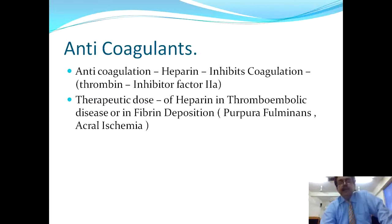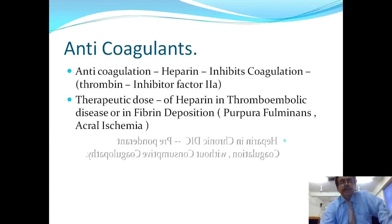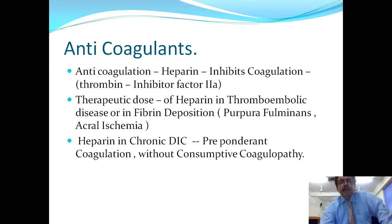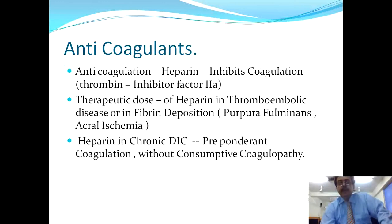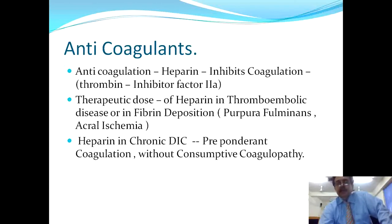The therapeutic dose of heparin is used in thromboembolic disease, fibrin deposition, purpura fulminans, or acral ischemia. Heparin in chronic DIC is given predominantly in the coagulant variety without consumptive coagulopathy. Remember: whenever there is co-existent consumptive coagulopathy, offering heparin can be more catastrophic — the patient can die with bleeding. You must assess whether the patient is in a state of consumption, as at that stage heparin offers no benefit and will be disastrous.